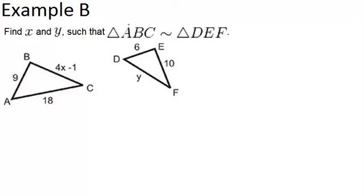From the similarity statement, you can see that AB will have to match up with DE. So AB and DE match up in our corresponding sides. We also know that BC will match up with EF, so BC and EF match up. And then that means that AC and DF also must match.